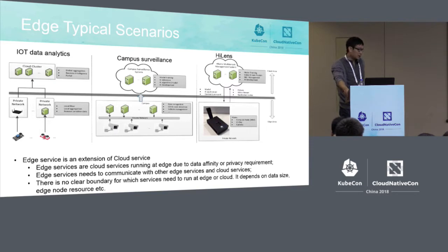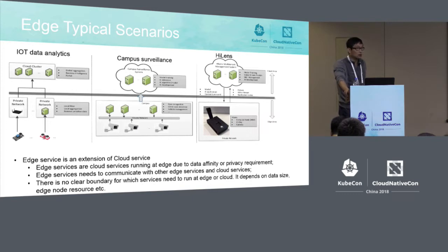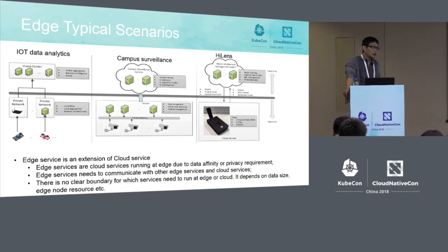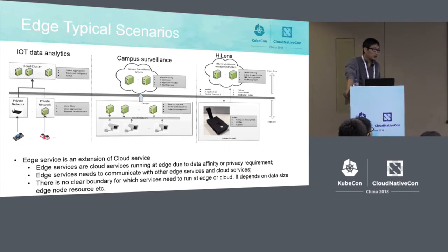Data affinity scheduling is actually a very mature and well-established mechanism in the cloud. For example, in big data platforms like Spark or Hive, one of the major scheduling tasks is data affinity scheduling — moving computation to the node that holds the data for better performance. This is not new for the edge; it's the same concept of moving computation to the edge node that generates the data.